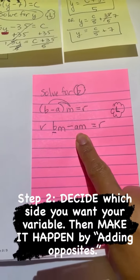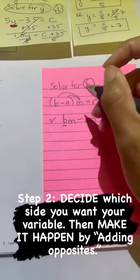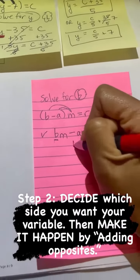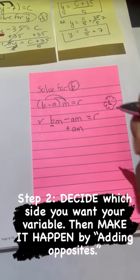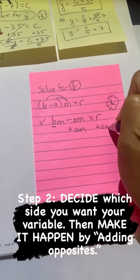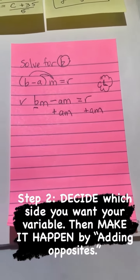To add its opposite. So the opposite of negative AM is positive AM. Positive AM. And whatever you do left side, you must do to the right side. So again, the language is still the same of what I'm doing. It's just using letters.